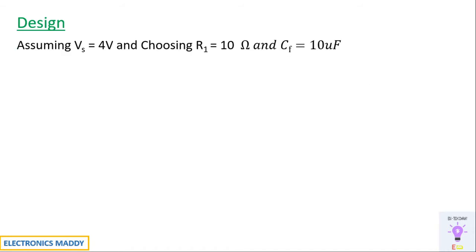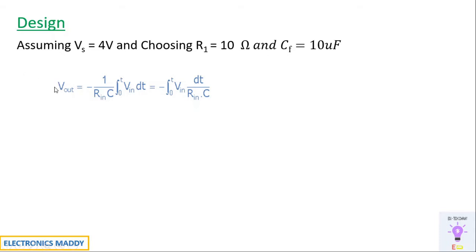Our design will start with certain assumptions based on our requirement — what output voltage is required. Based on that value, we can change R1, Cf, and all those values. We are assuming Vs to be equal to 4 volts, choosing R1 as 10 ohms and Cf as 10 microfarad. We will be finding out the value of Vout. Vout is basically given by the formula: minus of (1/RC) times the integral from 0 to T of Vin dT — minus because the input is given to the inverting terminal.